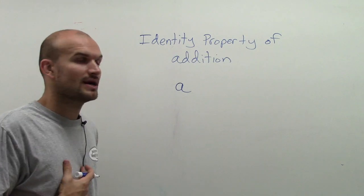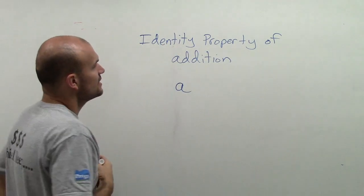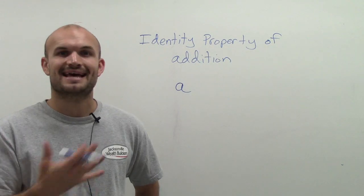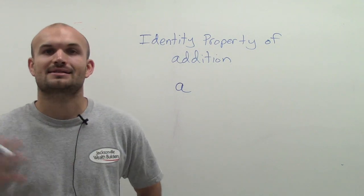So I have my real number A. So what it's saying is, the identity property of addition: is there a number that I can add to A that I can get back itself?